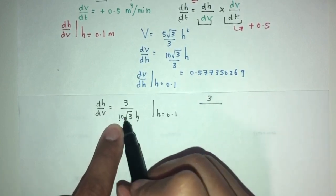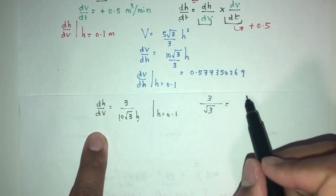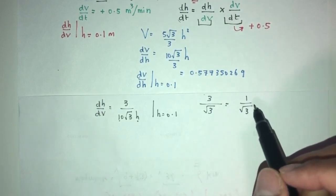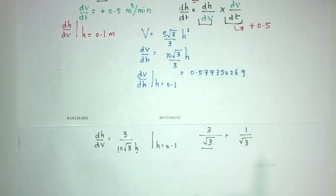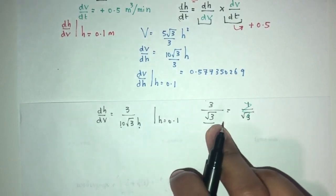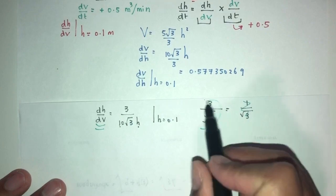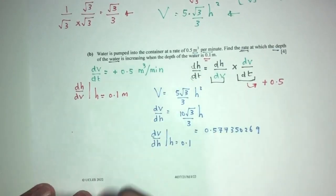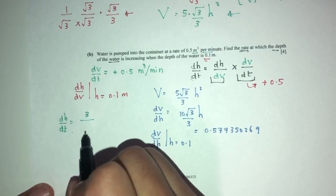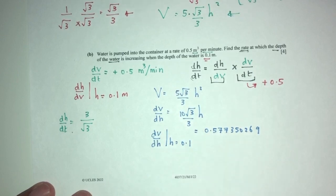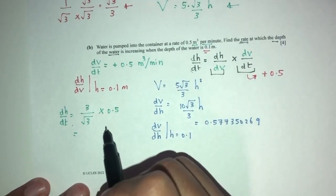Therefore dh/dt equals (3 over root 3) times 0.5 equals (3 over root 3) times (1/2). This gives the rate at which the depth of water is increasing when h equals 0.1 meters.